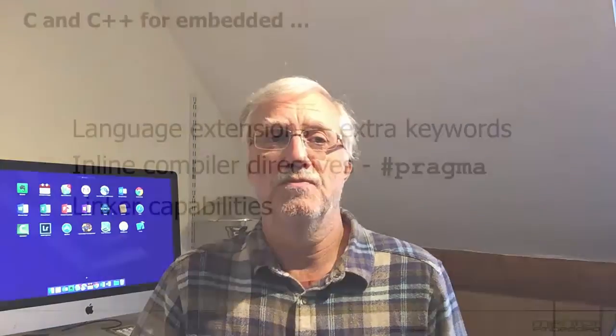However, these languages were not designed for embedded use — they just happen to fit the job quite well. There are a few bits of functionality which those languages lack, and we need to find ways of implementing that functionality. There are broadly three options: you can add extensions to the language, you can use compiler directives — usually using the hash pragma construct — or you can use the linker in creative ways to achieve the functionality that's required.